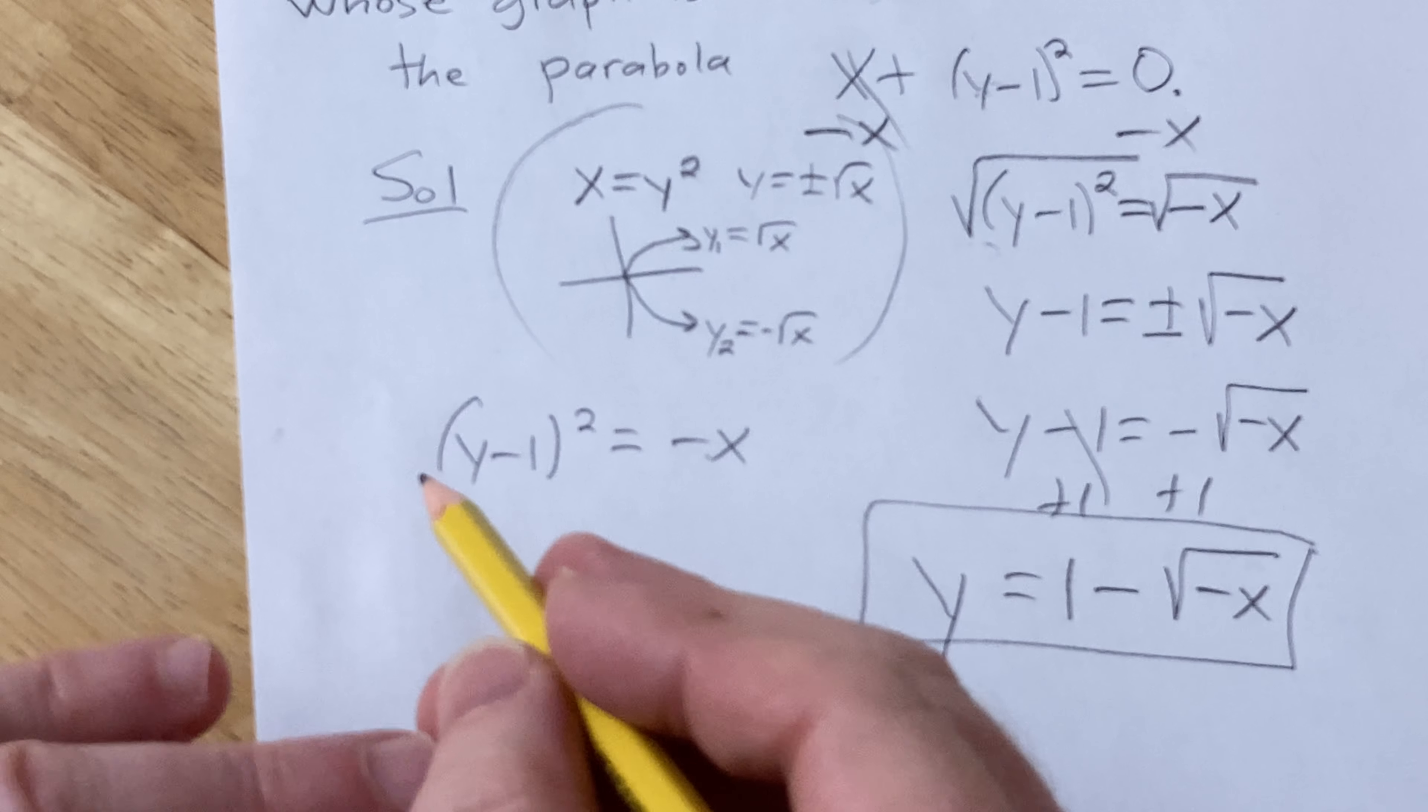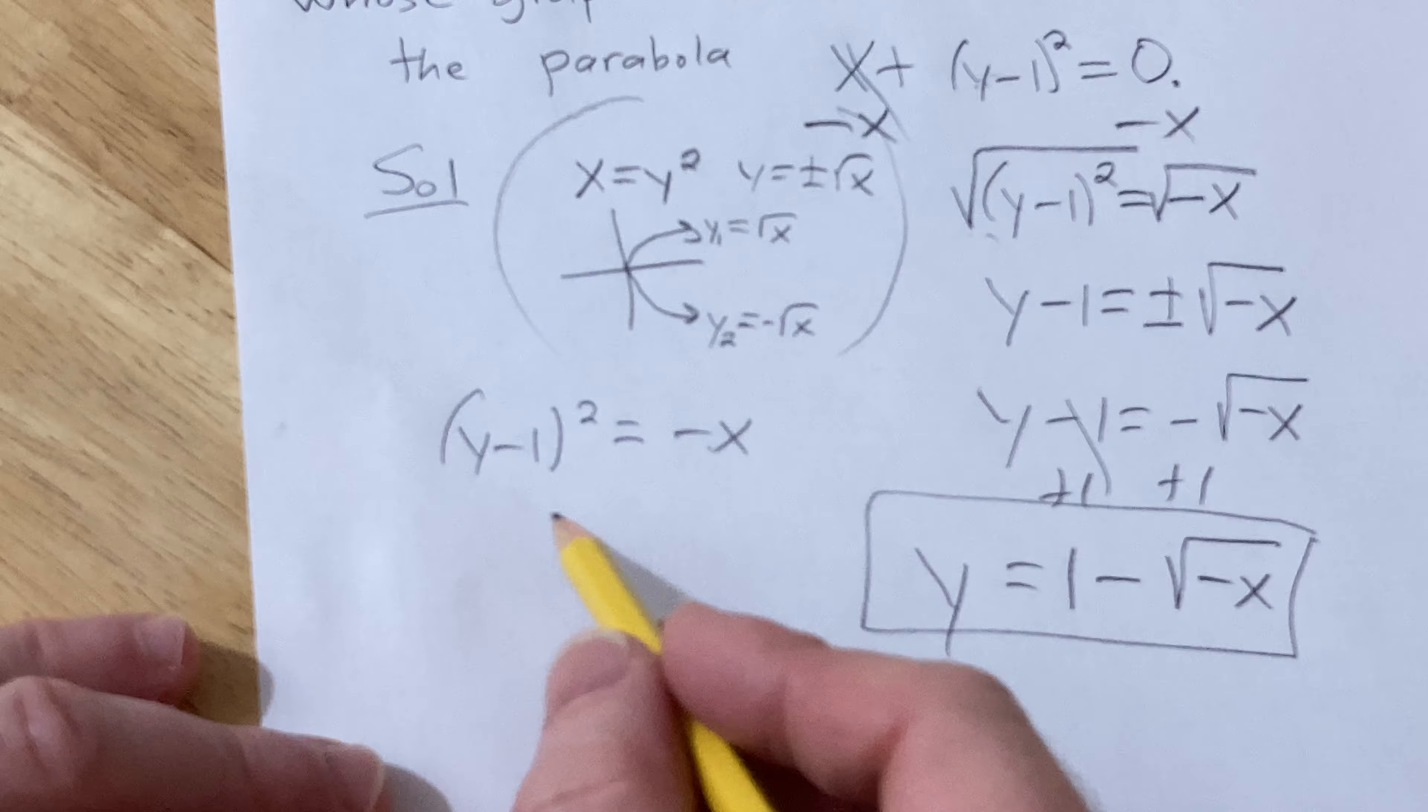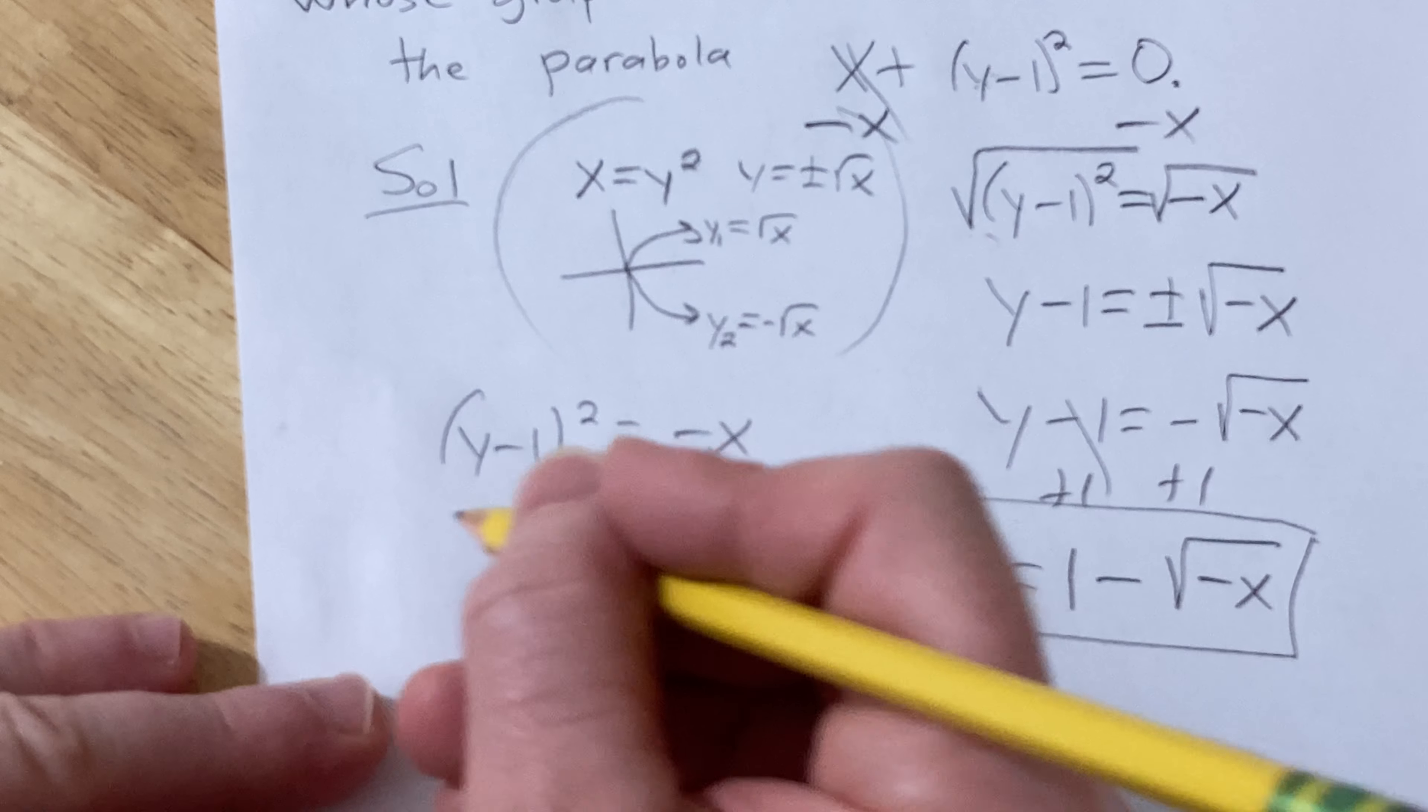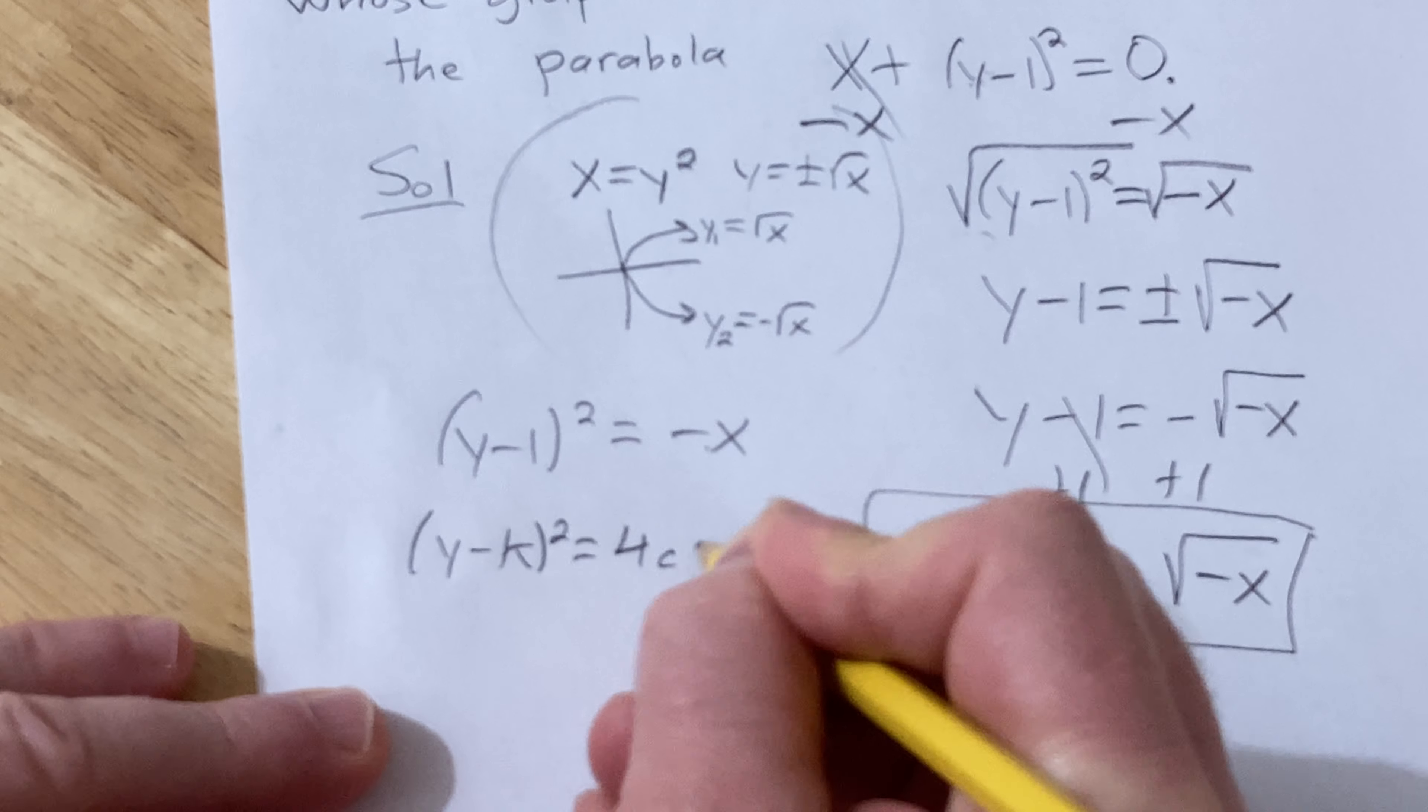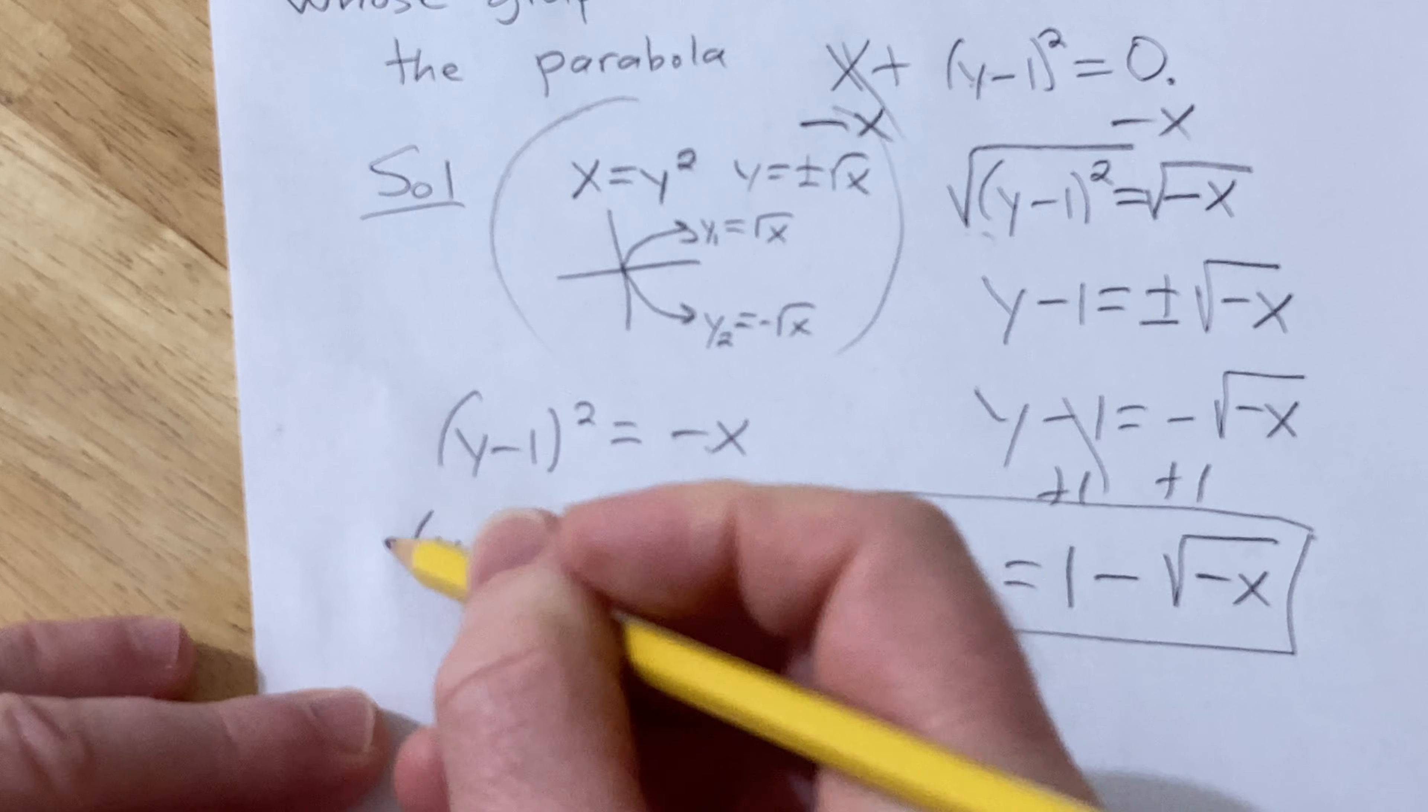Recall that the standard form for a parabola that opens left or right is the following: (y - k)² equals 4c times (x - h), right? That's the formula.